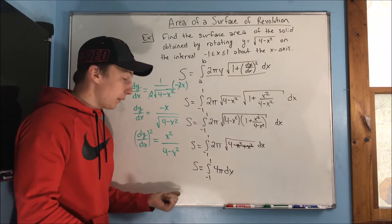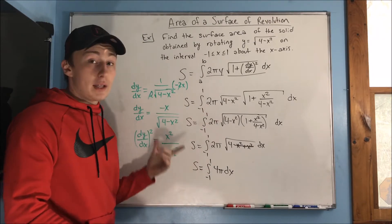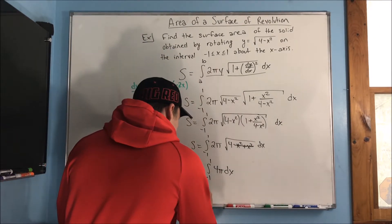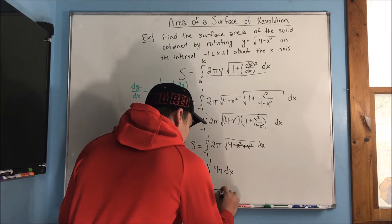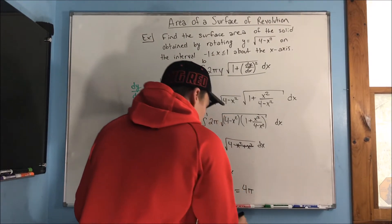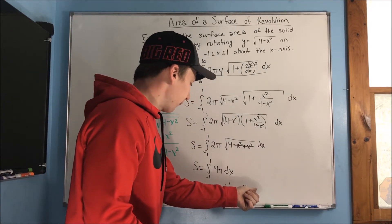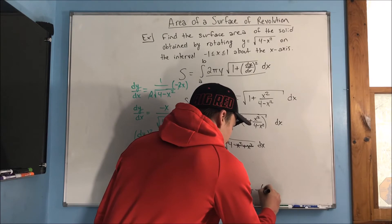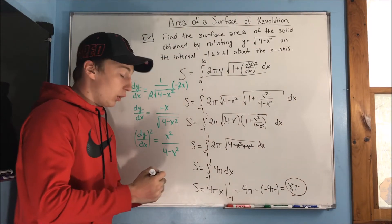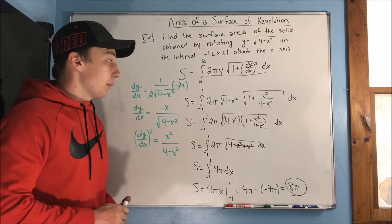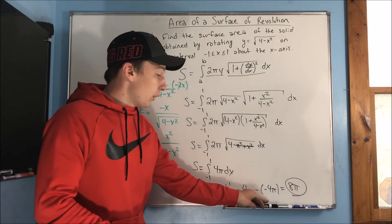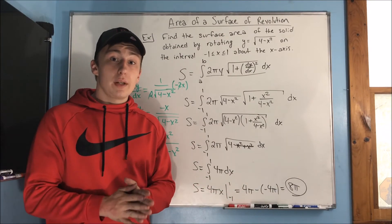Since 4π is a constant we can pull it out. The surface area equals 4π times x evaluated from negative 1 to 1, which gives 4π times (1) minus 4π times (negative 1), equaling 4π plus 4π, which is 8π. The tip here is to look for ways to combine those square roots and simplify — that's often what makes these problems workable.